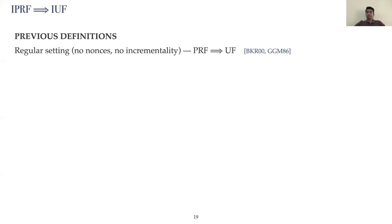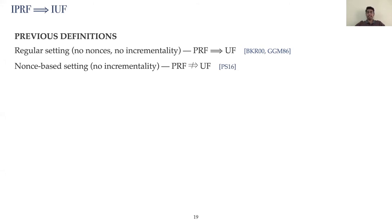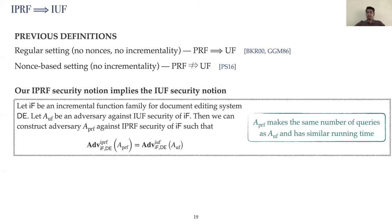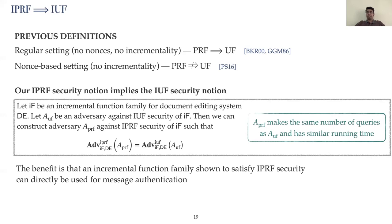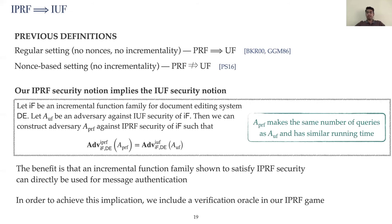We now discuss relations between pseudorandomness and unforgeability. In the standard non-incremental setting, it has been shown that PRF security implies UF security. Perrin and Siron have shown in 2016 that for nonce-based definitions, there is a separation between PRF security and UF security — though those definitions are not for the incremental setting. In our work, we show that our PRF security notion implies our UF security notion, with no security loss in the reduction. The consequence is that once we show IPRF security, we can immediately use the scheme for message authentication. Achieving this implication was a motivation behind including the verification oracle in our IPRF game, which makes our definition differ from non-incremental versions of PRF security.